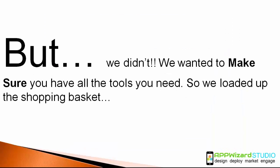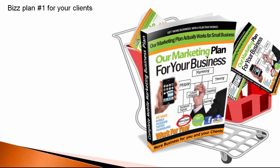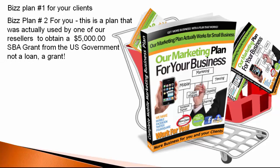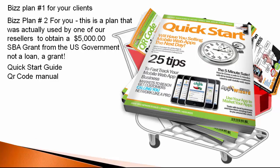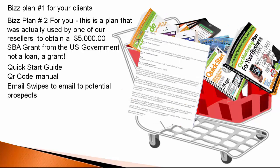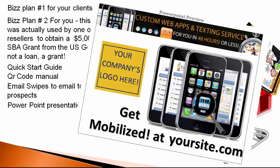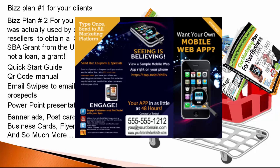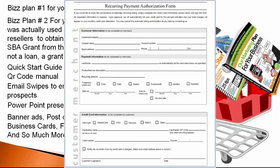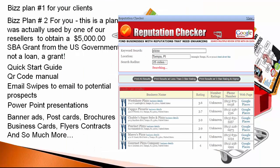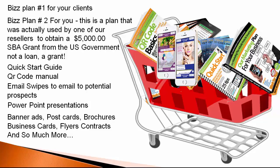I want to make sure that you have every single tool that you need. We literally loaded up the shopping basket: our biz plan for your clients; Biz Plan 2 for you — a plan actually used by one of our resellers to obtain a $5,000 SBA grant from the U.S. government, not a loan, but a grant. You have access to that business plan, quick start guide, QR code manuals, email swipes to email potential prospects, PowerPoint presentations, banner ads, postcards, brochures, business cards, flyers, contracts, and so much more — not to include step-by-step individual training on each part of our platform.